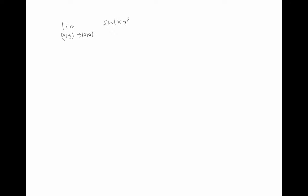In the review session, we looked at the limit as x, y goes to zero, zero, of sine of x y squared over x squared plus y squared. I'd like to prove that this limit is equal to zero. I'll try to do that in two different ways: using polar coordinates and using epsilon-delta.